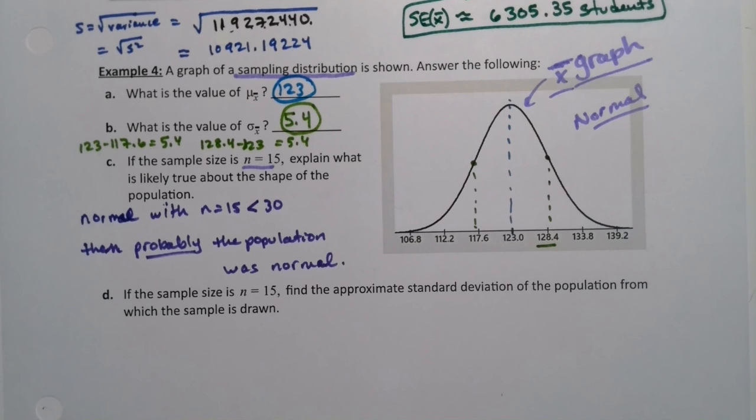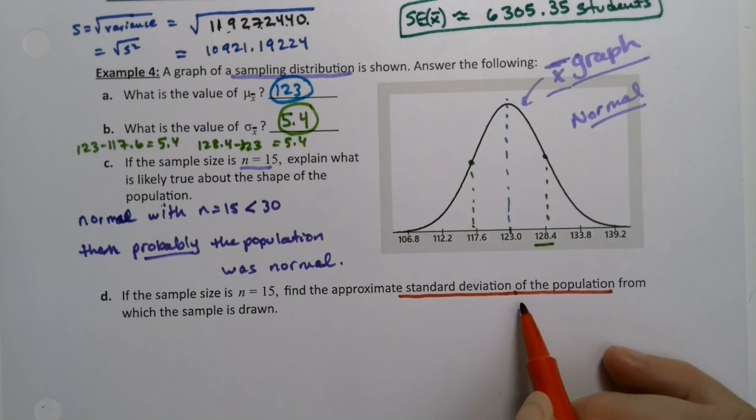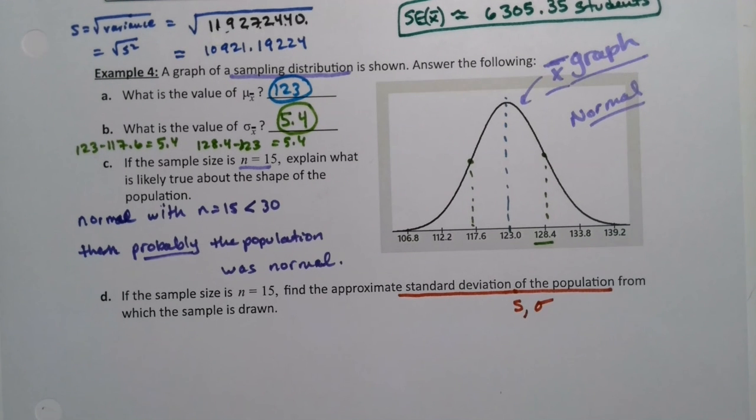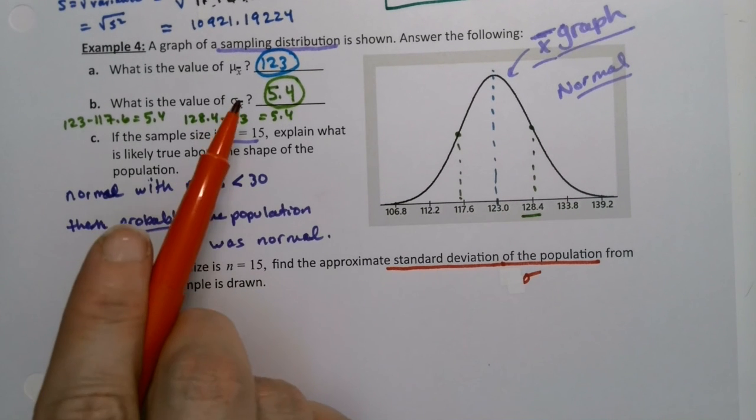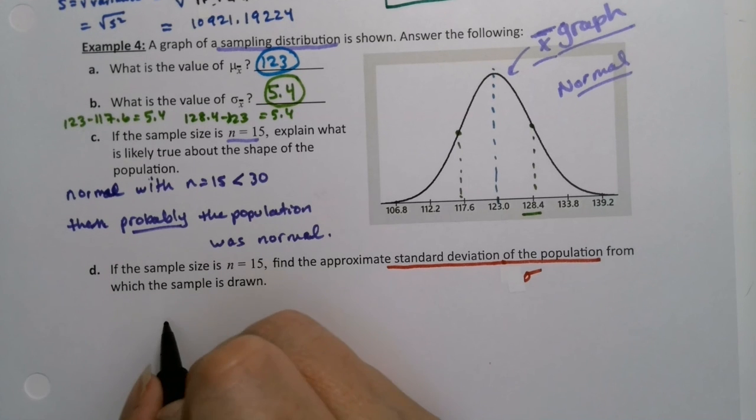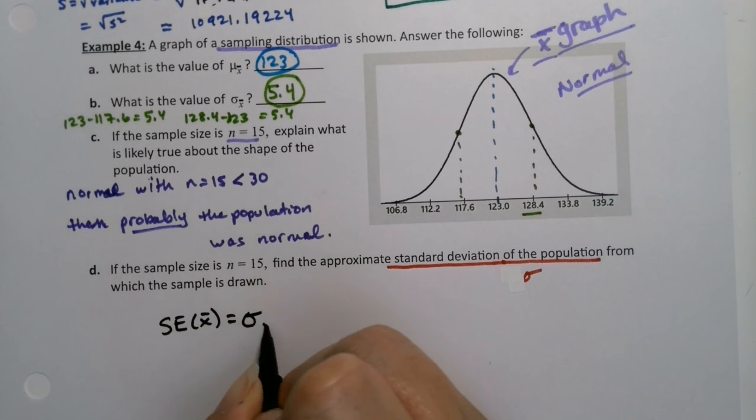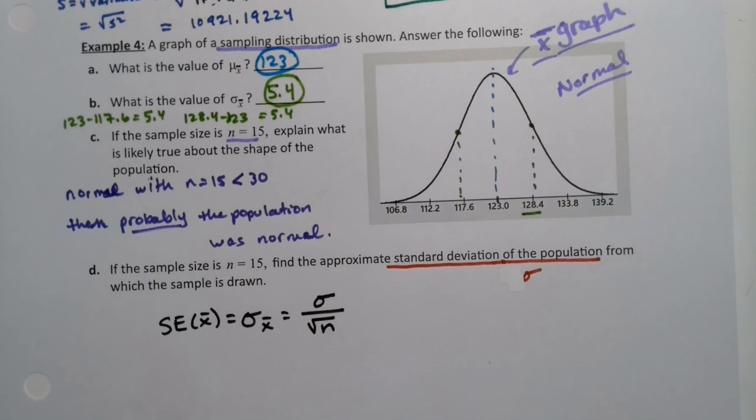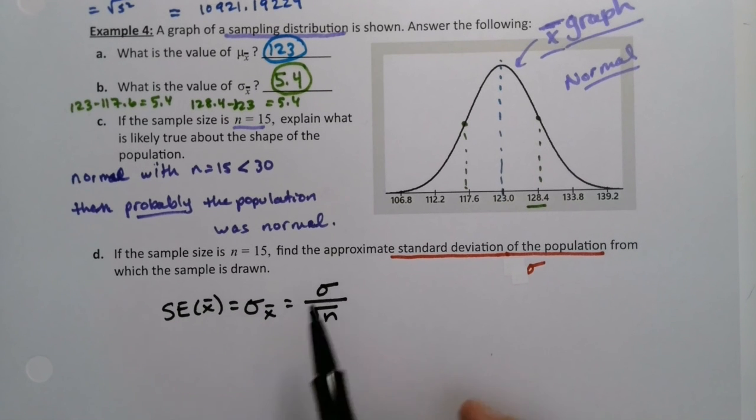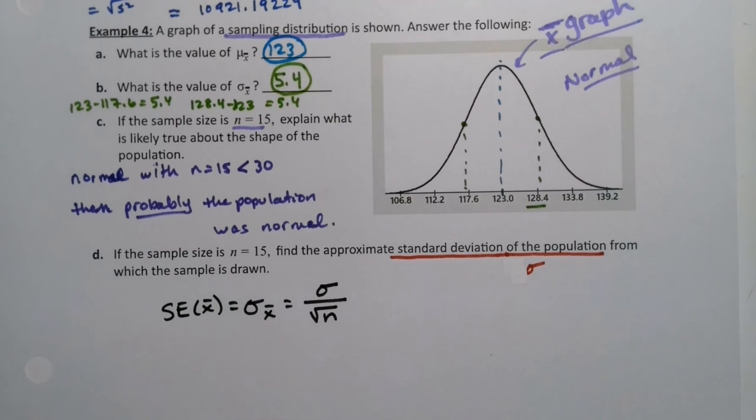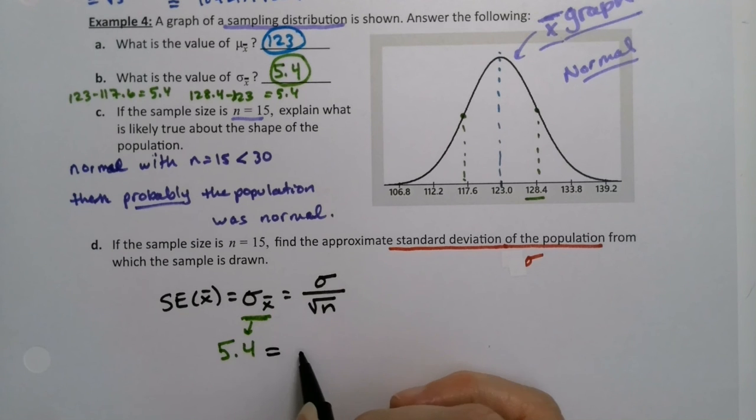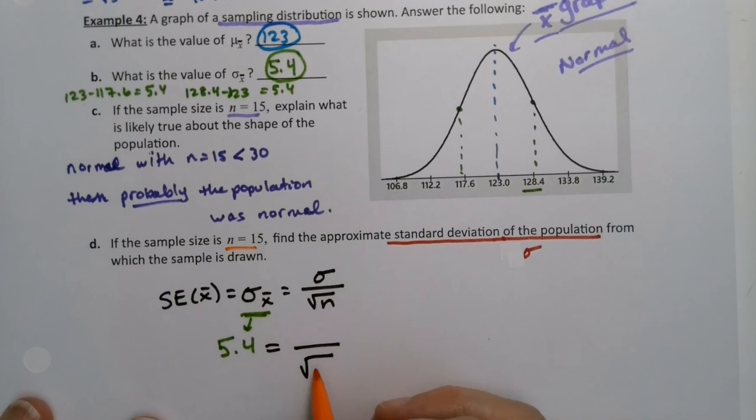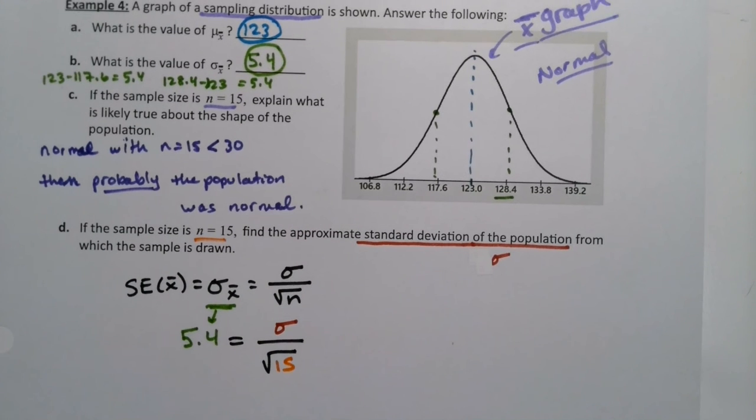Now here's where the real fun begins. Find the approximate standard deviation. That's s. The standard deviation of the population is s or sigma. For this purpose, you'd probably go with sigma because it's talking about the population. Not sigma sub x-bar, sigma. Well remember, we have a formula for the standard error of x-bar, which is what sigma sub x-bar is. It's sigma over the square root of n. And so what they're asking us to do is solve for sigma, but we know sigma sub x-bar. Sigma sub x-bar we already found based on the inflection points, it's 5.4. So we know this is 5.4. We don't know what sigma is, but we do know that n is 15.